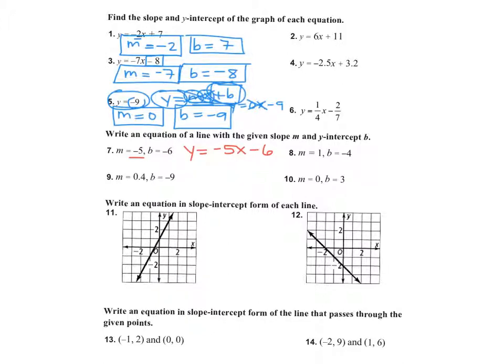We'll do one more of those. Number nine: y equals 0.4x minus nine. And I'll let you do eight and ten on your own because those are pretty quick.